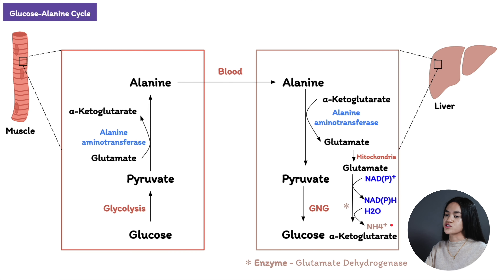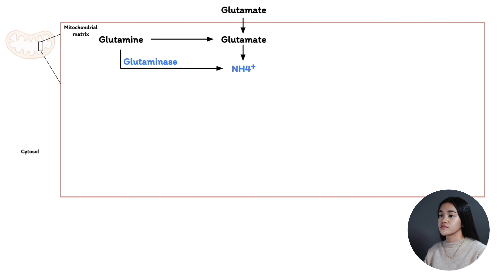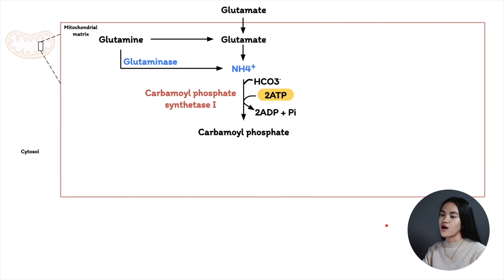Urea is non-toxic and water-soluble; it is exported to the kidneys and excreted in the urine. The urea cycle occurs in the liver and requires ATP. The ammonium ion generated in liver mitochondria is immediately used together with carbon dioxide as bicarbonate — produced by mitochondrial respiration — to form carbamoyl phosphate in the matrix. This ATP-dependent reaction is catalyzed by carbamoyl phosphate synthetase I, and carbamoyl phosphate then enters the urea cycle.